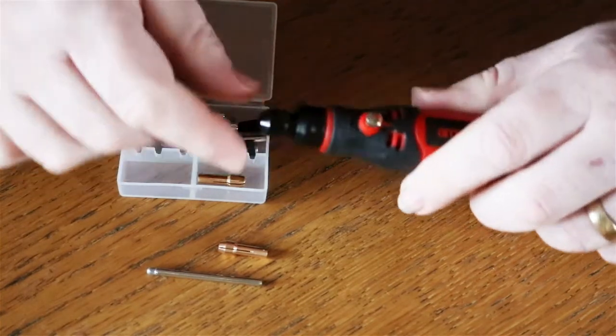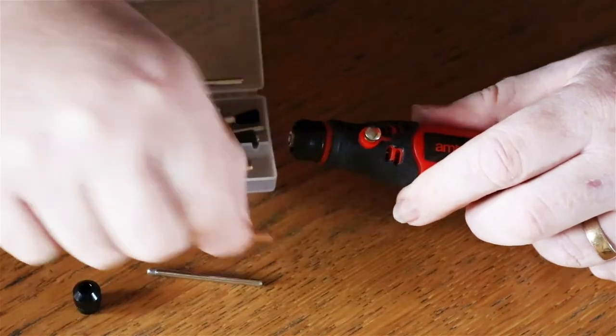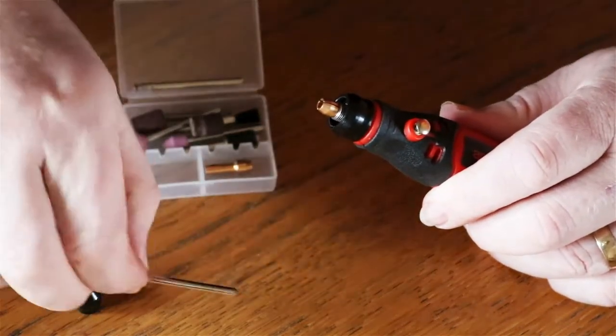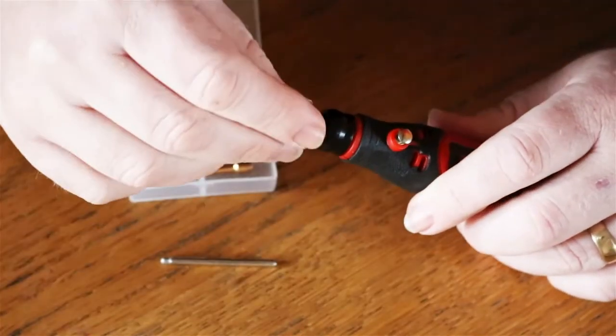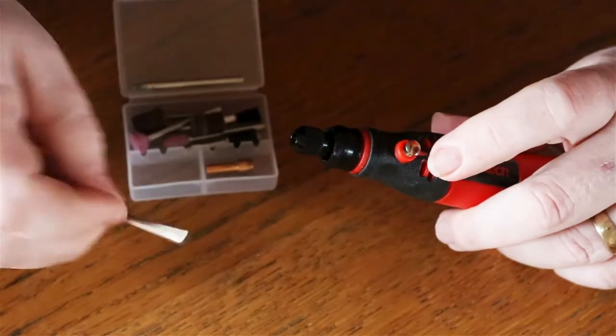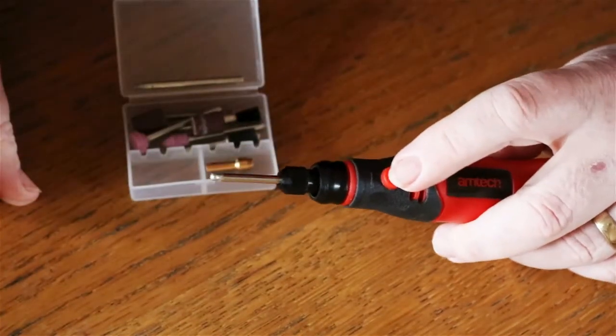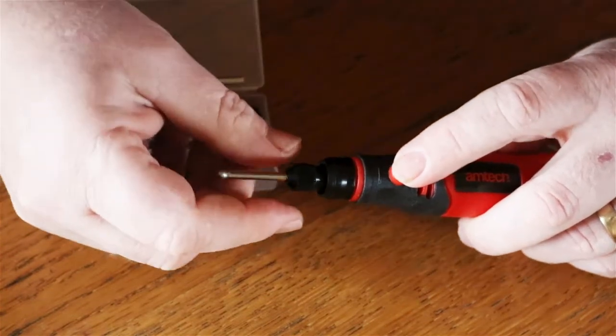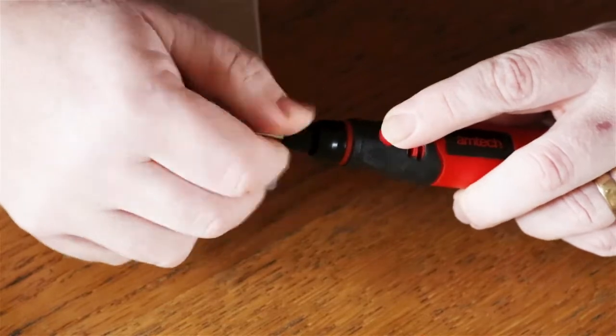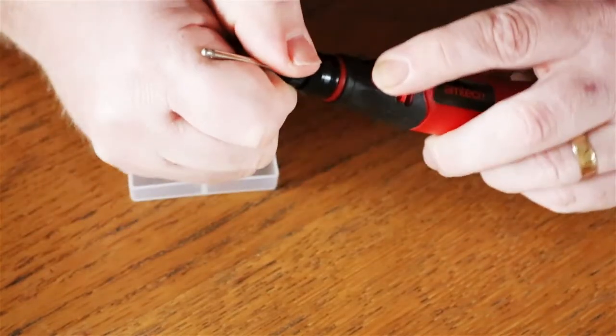Remove the collet chuck, select the right size collet for the accessory you are using, re-attach the collet chuck but only a slight way. Put in the accessory you are going to use. We are going to be doing some grinding, and then hold down the silver button and twist and tighten the collet chuck up so it is hand tight.